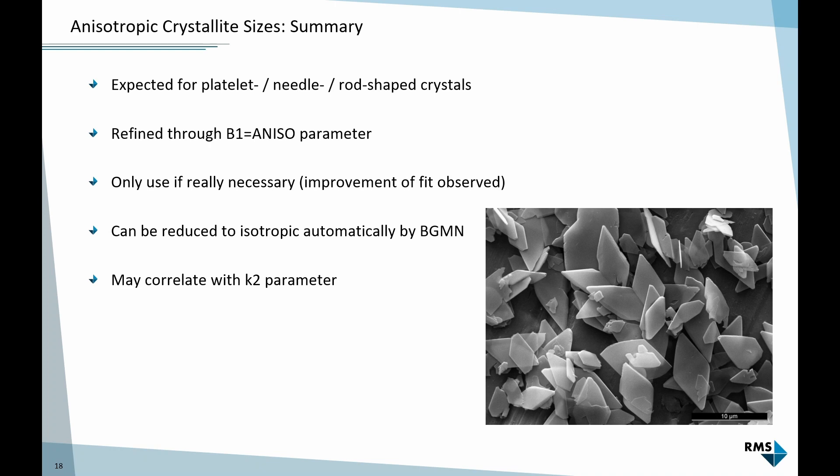It's another one of these parameters that BGMN can decide that the data quality is not sufficient to refine it anisotropically. You will see it in the protocol. It says something like anisotropic refinement of B1 was reduced to isotropic. It also helps stabilize our refinement and in most cases it correlates strongly with the K2 parameter. So measure up to high angles if that's what you're interested in.